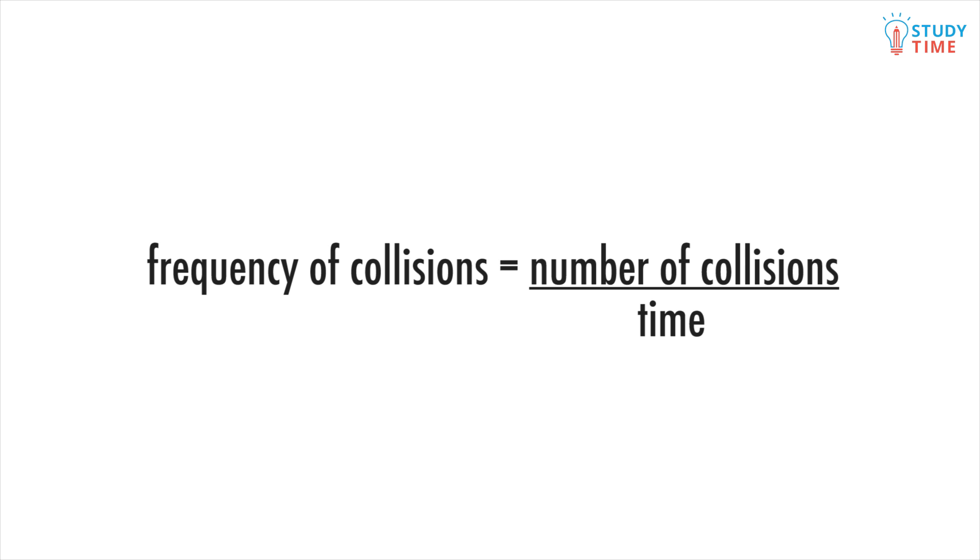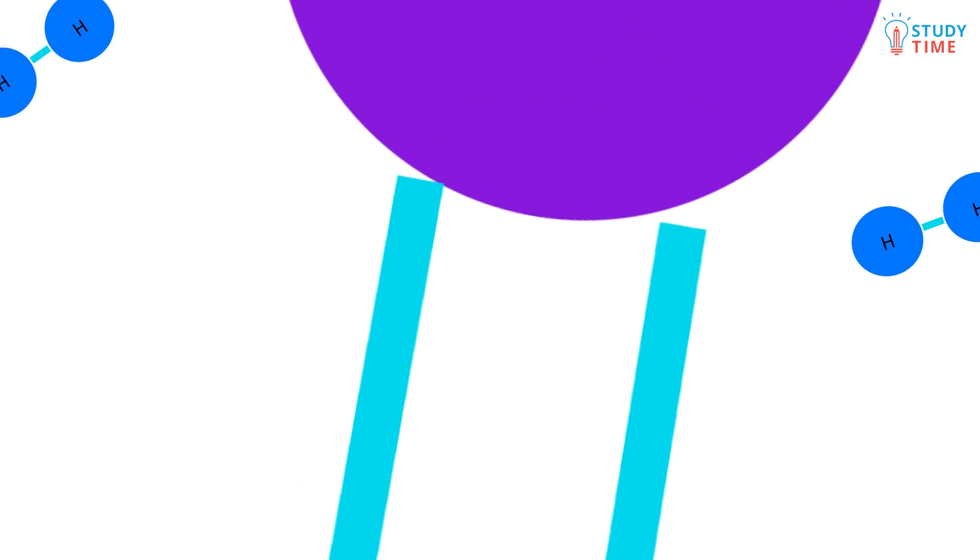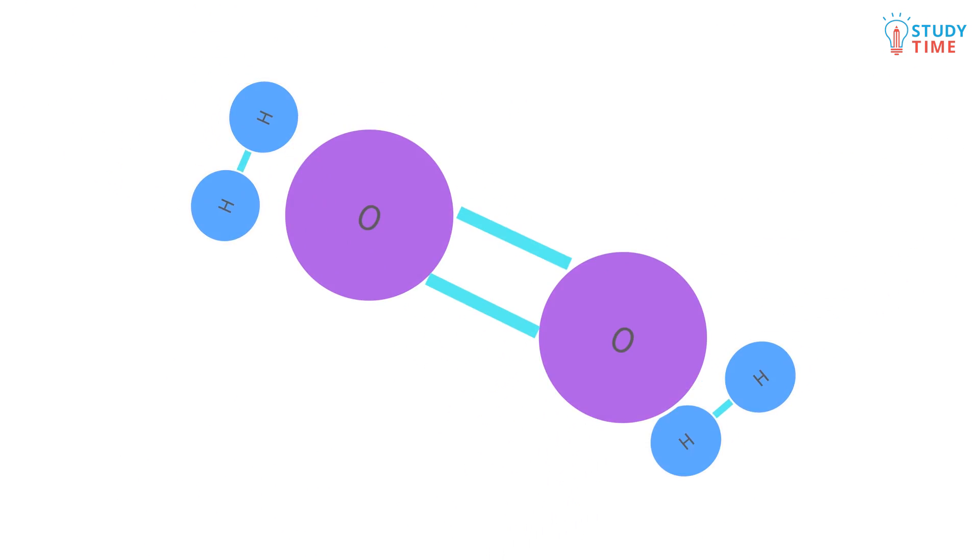The amount of collisions that occurs over time is the frequency of collisions. If reactants smash into each other with enough energy, they'll break apart and rearrange themselves into the product, a new molecule. This amount of energy is called activation energy, EA.